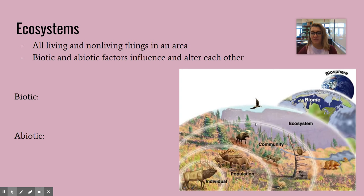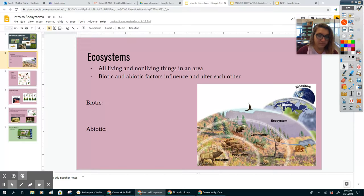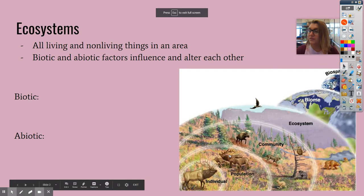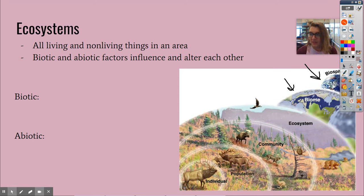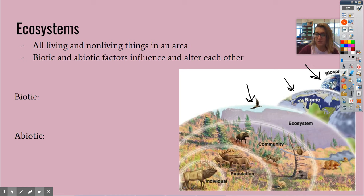Ecosystems are part of the levels of organization of the world. So we first have our biosphere, then we have our biomes, which we'll be talking about at the end of this unit — those are large areas with the same climate factors. Then we have our ecosystems, which is all the living and non-living things in a set area. Within each ecosystem you have communities, which are all of the different species in one area, then populations, which is one species, and then individual, which is one organism within a species.